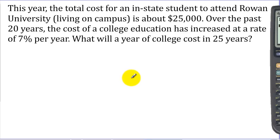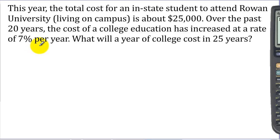Something important to you and your families soon is the cost of college education. This year at Rowan University in New Jersey, the cost including tuition, dormitory, meal plan, and books is about $25,000 per year for a New Jersey resident. Over the past 15 to 20 years, college education costs have increased on average about 7% per year. Over four years we're talking over $100,000 for college. What will it cost in 25 years when you might be helping your children go to college?